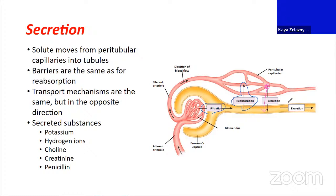Our final directional process: if you urinate something out, that's excretion. So these are our four directional terms for substances: filtration—getting into the nephron; reabsorption—going from the nephron back into your bloodstream; secretion—from some later part of the bloodstream into the nephron; and excretion—totally leaving your body.